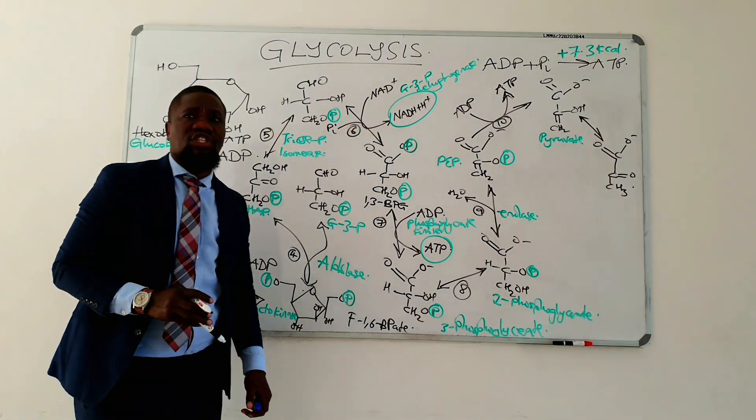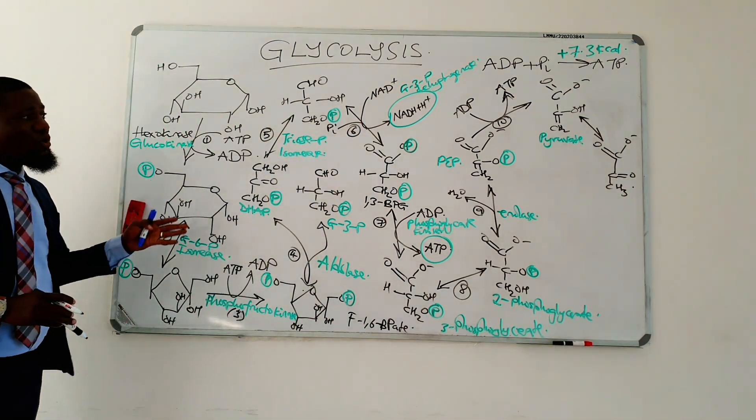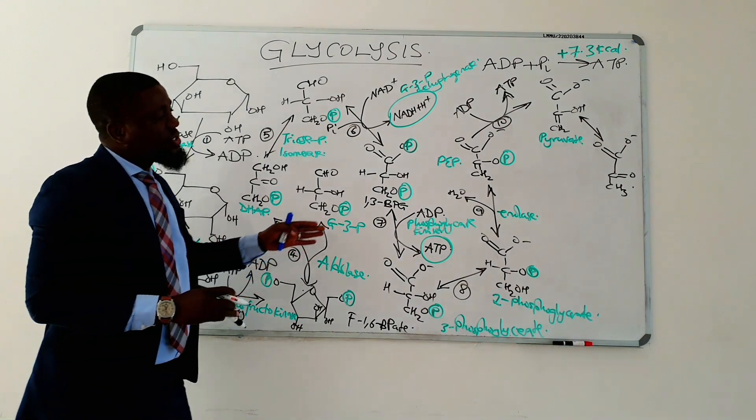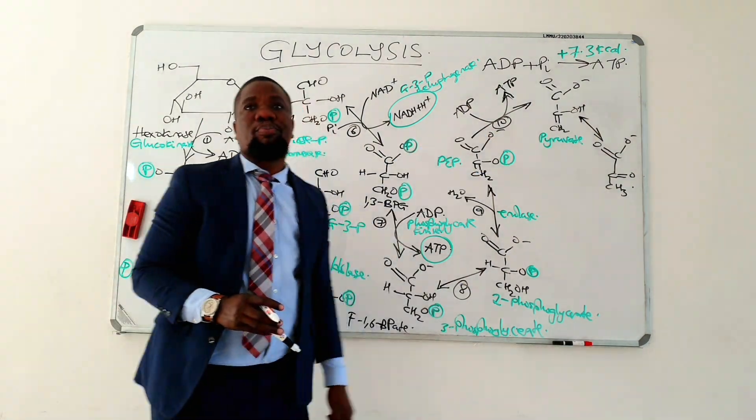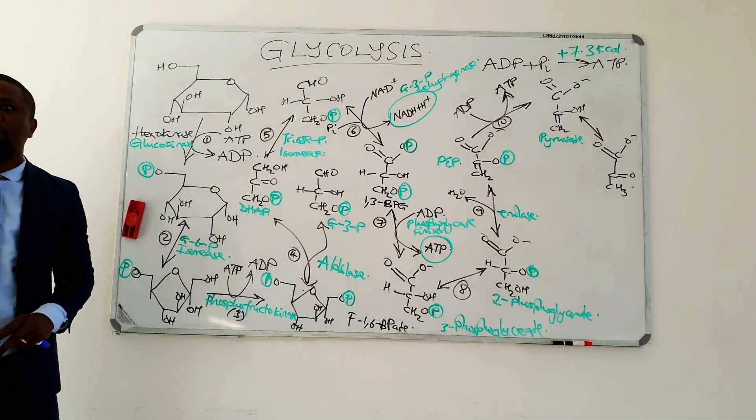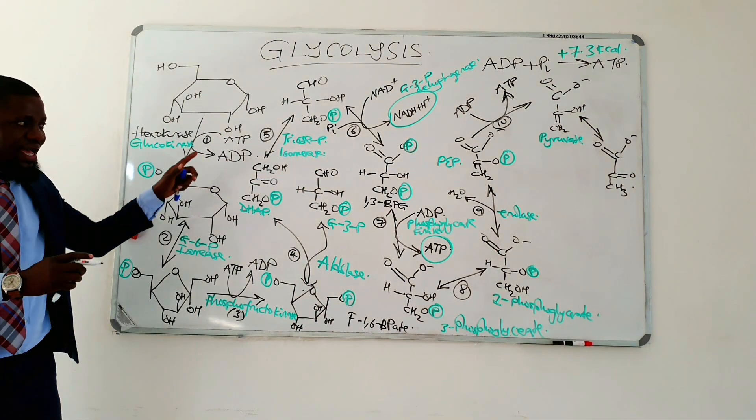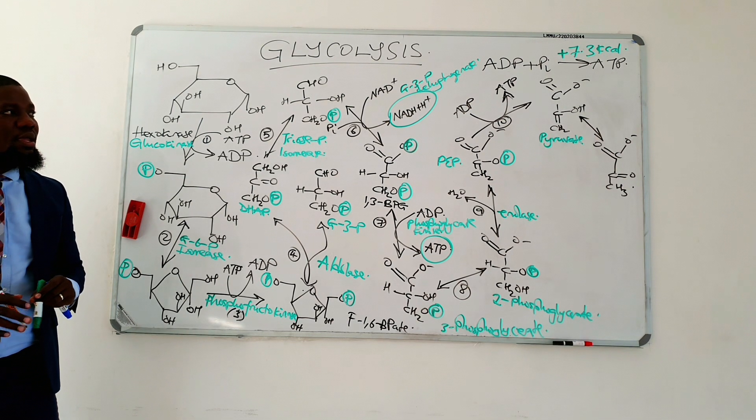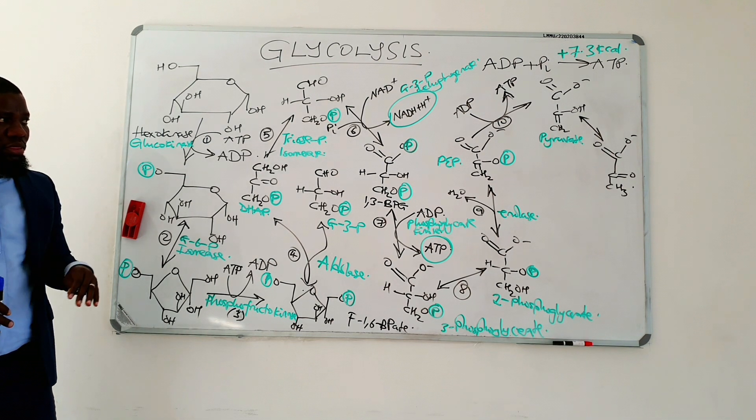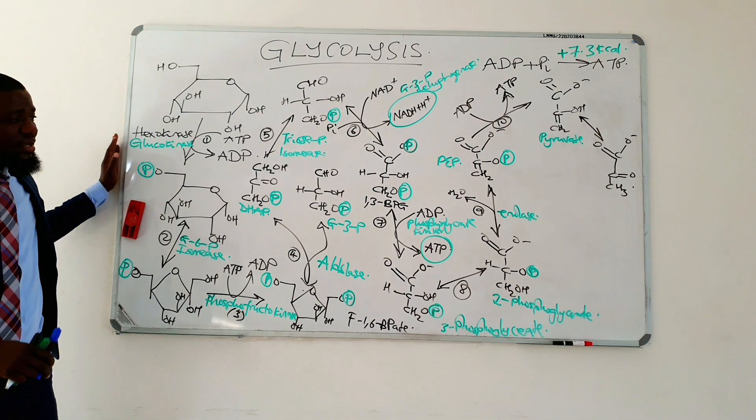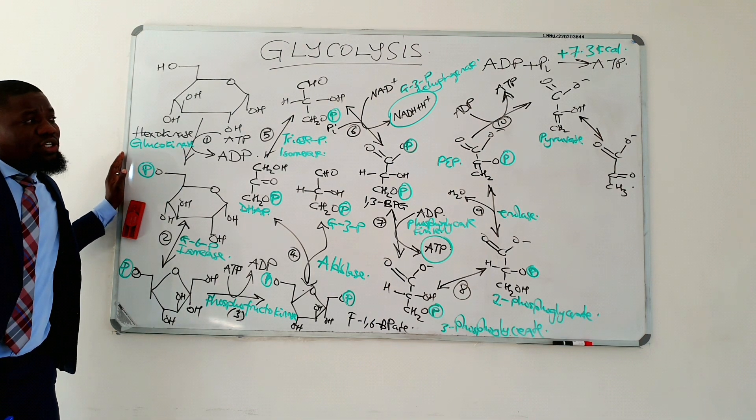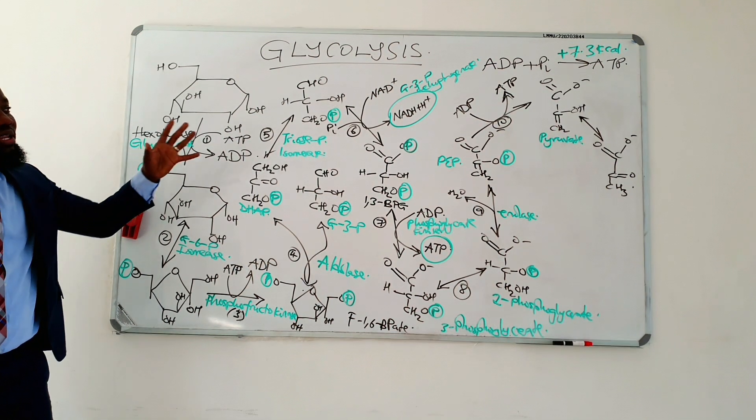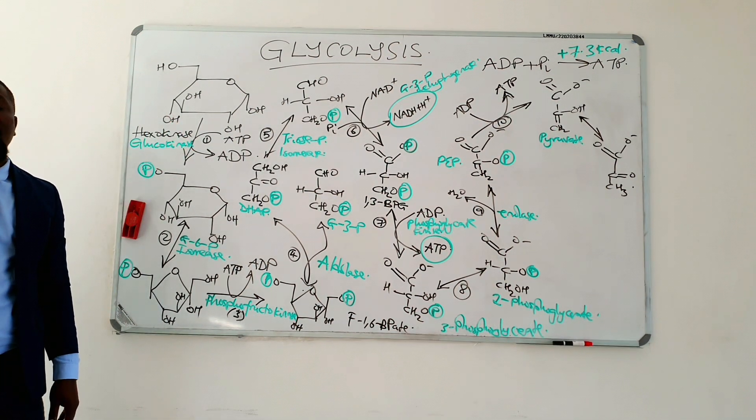This, in a nutshell, is how glucose is going to be broken down in a series of 10 reactions to produce the end product pyruvate. That is it in a nutshell. Now, now that we have seen these reactions, I want to tell you a few other things that are important when it comes to a discussion of glycolysis.